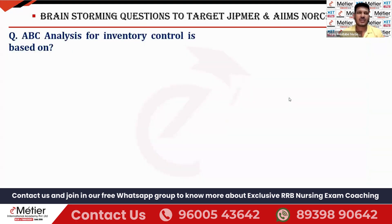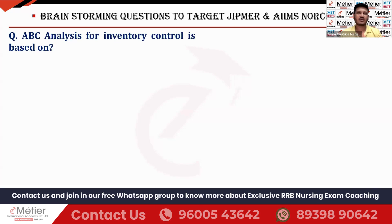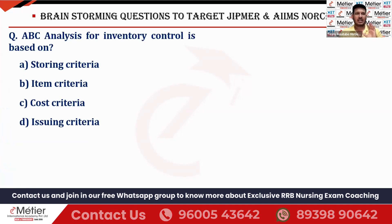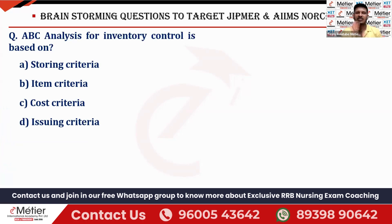The first question is: ABC Analysis for Inventory Control is based upon? They have given four options: storing criteria, item criteria, cost criteria, and issuing criteria. So, ABC Analysis for Inventory Control is based upon what criteria?